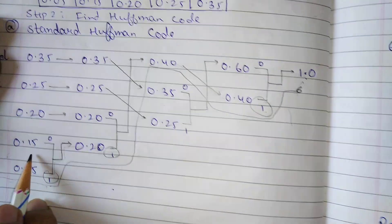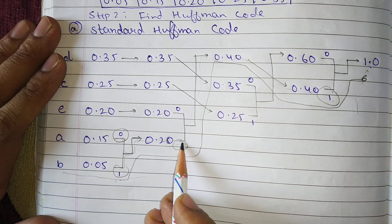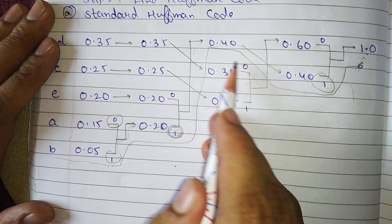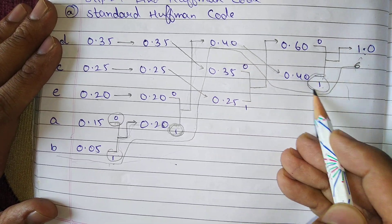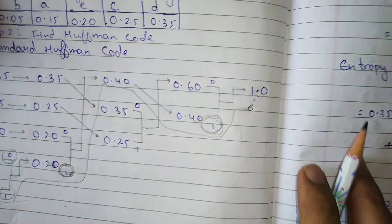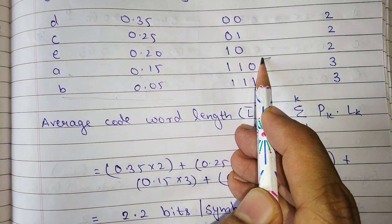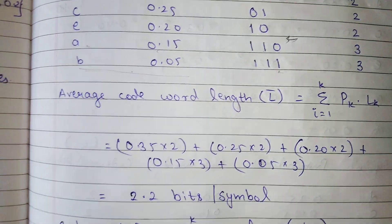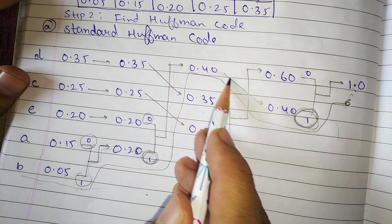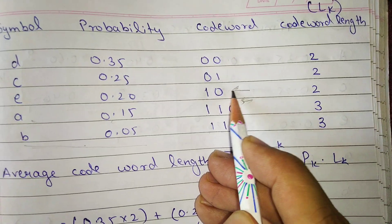For a: it starts with 0, then goes to 1, then moves up and comes down to 1 again. So the path gives 0, 1, 1. Remember, you have to write it from the backward side, so the codeword of a is 0 1 1.